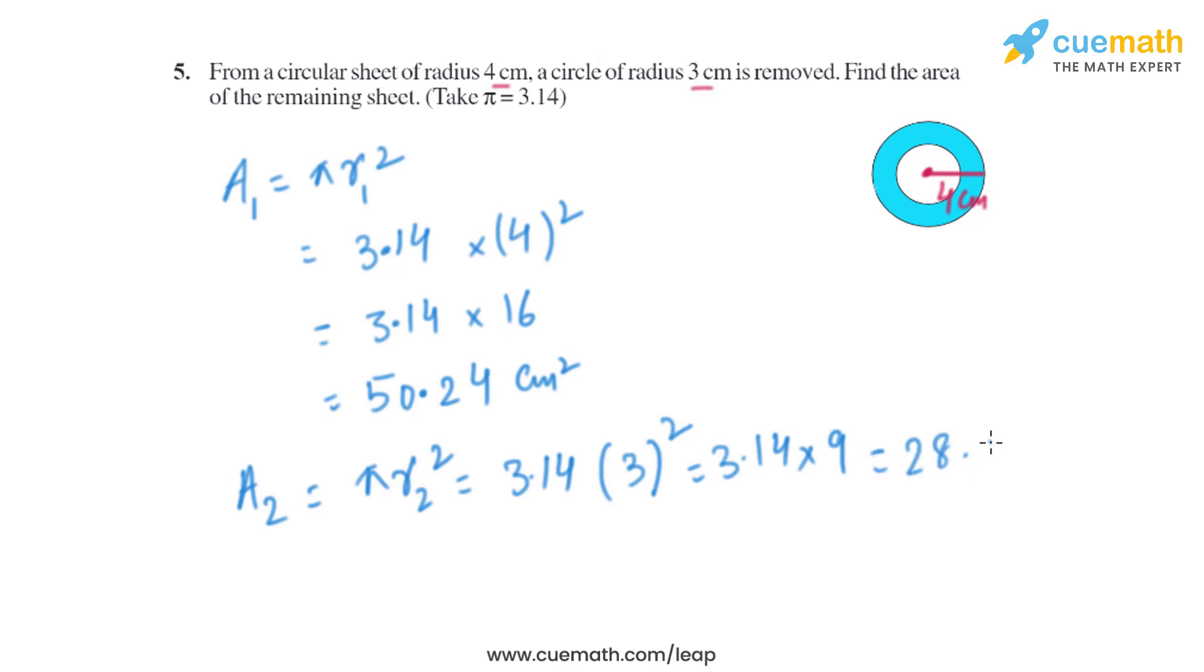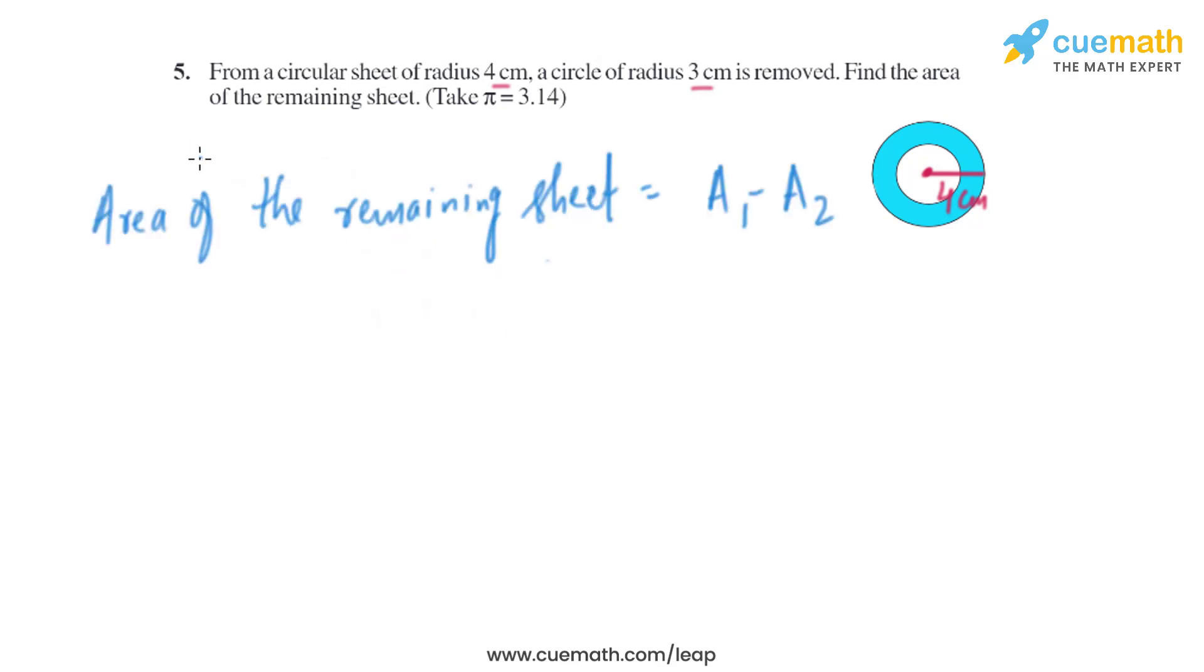The area of the second circle is 28.26 cm². Now this area is removed, so we need to subtract this area from the area of the circle of radius 4 cm. The area of the remaining sheet is